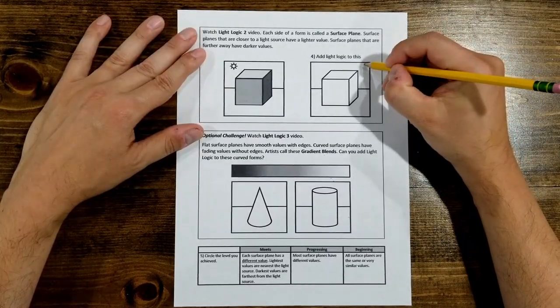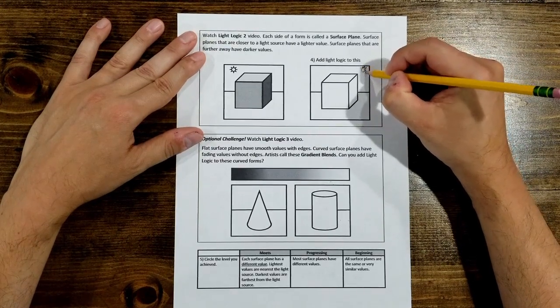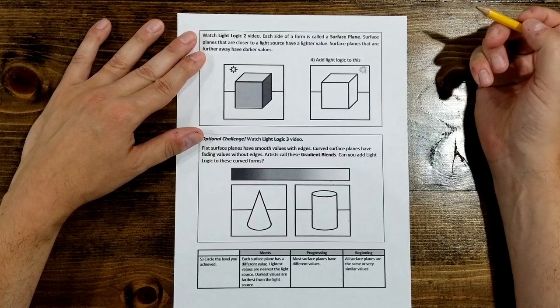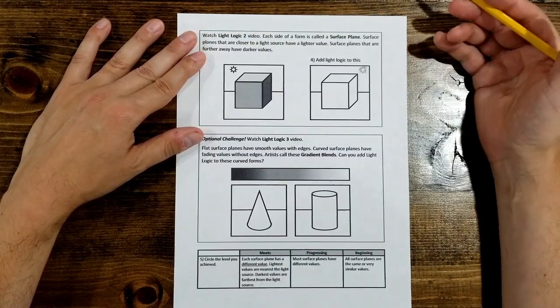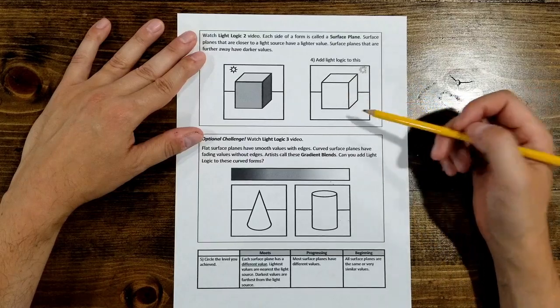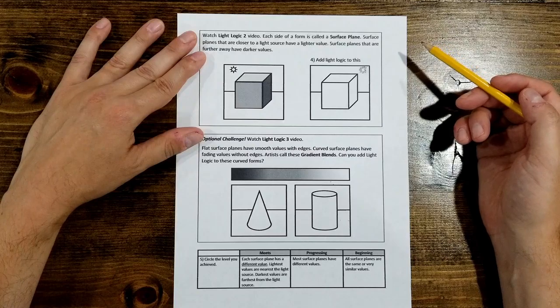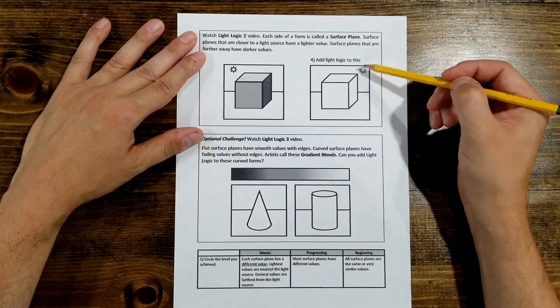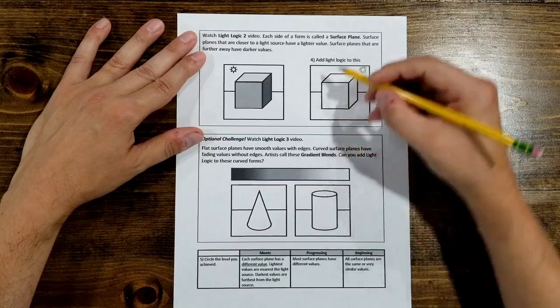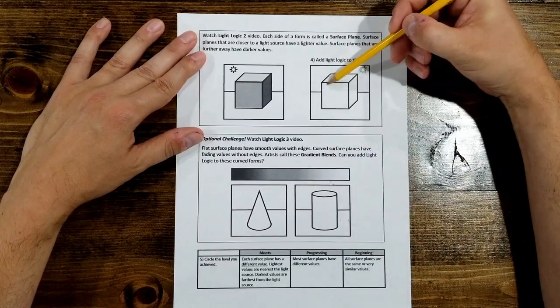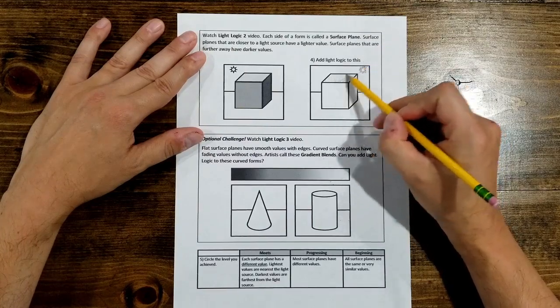So I want you to choose a light source, and if it helps, you can draw it in. I'm going to draw a little sun here just to remind me. And then I want you to pick one of your textures or line qualities as you apply the shadows on this box using light logic. So the sun is high, so the highest surface is probably going to get the lightest value. I'm going to choose to do cross hatching. So I'll do some really light hatching, and then some cross hatching.